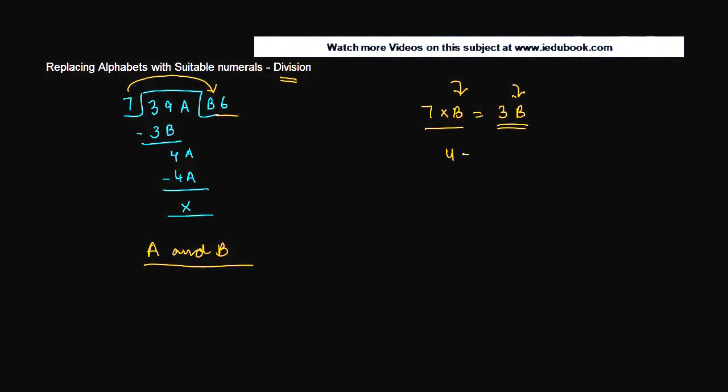Now we know 7 times 4 is how much? 28. 7 times 5 is how much? 35. And 7 times 6 is 42. But we are looking at something which has 3 at the tens place. Hence, B has to have a value of 5 because in that case only 7 into 5 will give you 35, or B will be equal to 5 in both cases. So the value of B becomes 5.